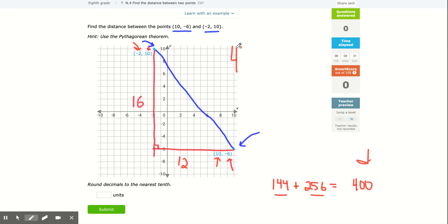If the area of the big square is 400, we square root that to find that the length of this side is 20, or the distance between those two points is 20. I used the Pythagorean Theorem to do that.